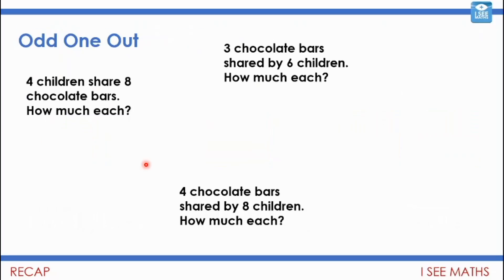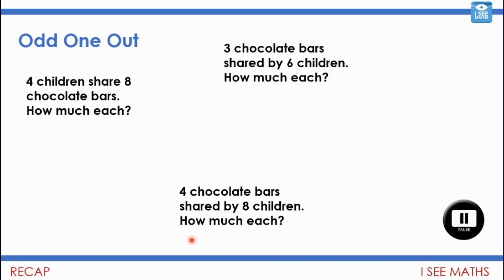Now have a look at these ones to extend that thinking. Odd one out — which question is the odd one out? Four children share eight chocolate bars, how much each? Or three chocolate bars shared between six children, how much each? Or is it four chocolate bars shared by eight children, how much each? Pause the video and see if you can spot the odd one out.